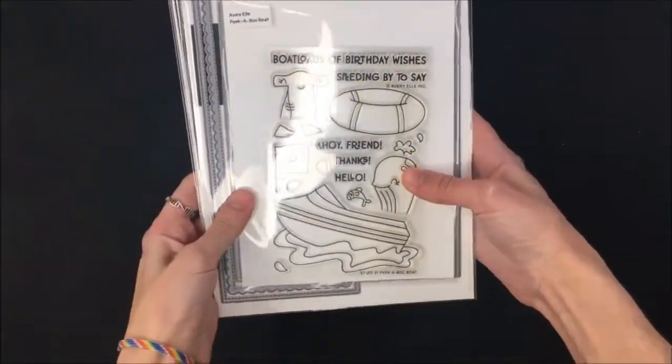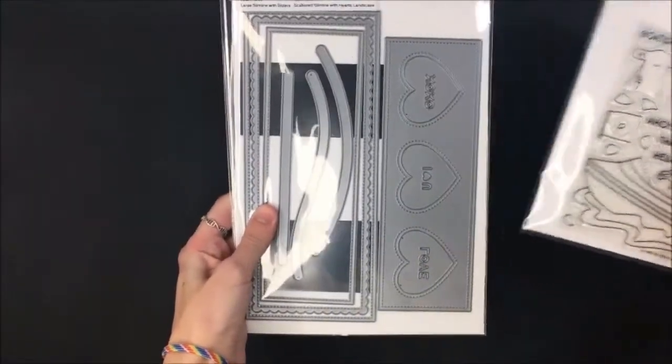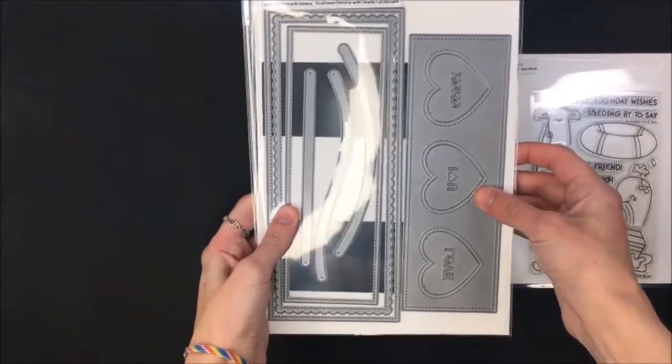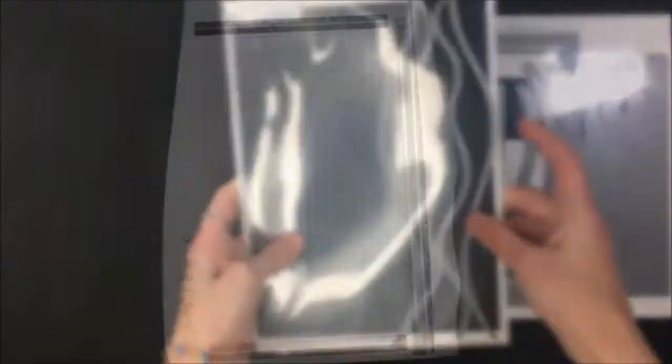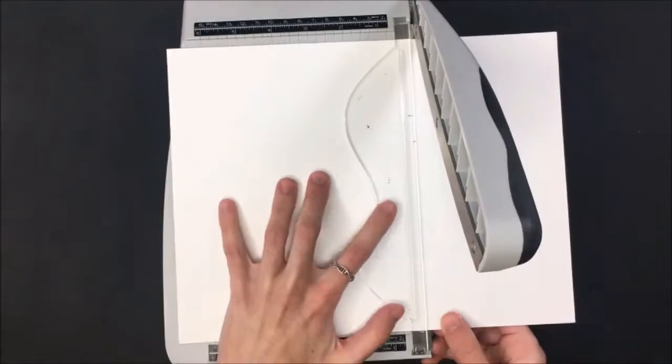In addition to the peekaboo boat stamp we're also going to be using the Lawn Fawn large slimline with sliders for that background rectangle and the Lawn Fawn scallop slimline with hearts landscape for that scalloped edge as well as the slimline stitched hillside borders.